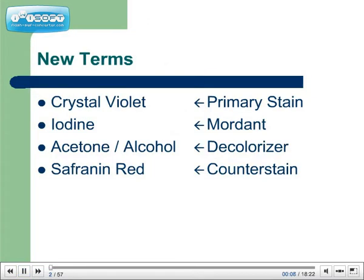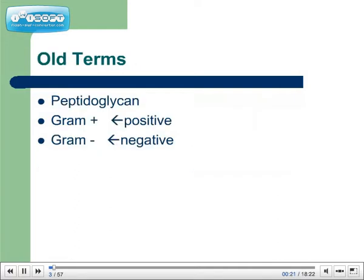Here are your new terms for today. Crystal violet, which is the primary stain. Iodine, which is the mordant. Acetone or alcohol, which is the decolorizer. And safranin red, which is the counterstain. Here are some old terms you're going to have to use to understand this material: peptidoglycan, gram-positive, and gram-negative.